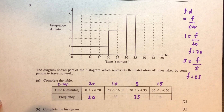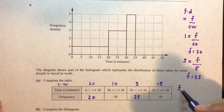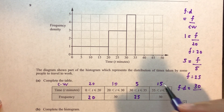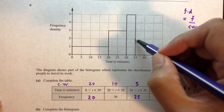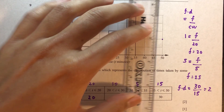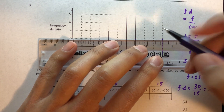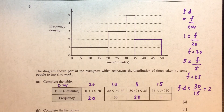For part b, complete the histogram. The last interval is 35 to 50. The frequency is 30 and class width is 15, so frequency density equals 30 divided by 15, which is 2. Draw the bar at height 2 and join the lines to complete the histogram.